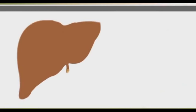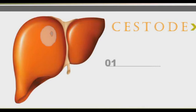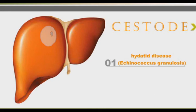The last main helminthic group is Cestodes. A famous example of this group is Hydatid disease, caused by Echinococcus granulosus. It can induce serious damage to the liver. The ultimate treatment of Hydatid disease is surgery, and the main antihelminthic agent used in this infection is Albendazole.